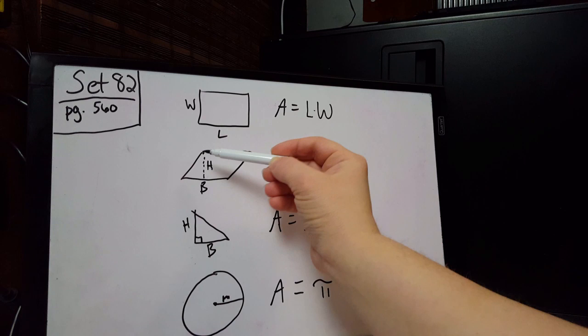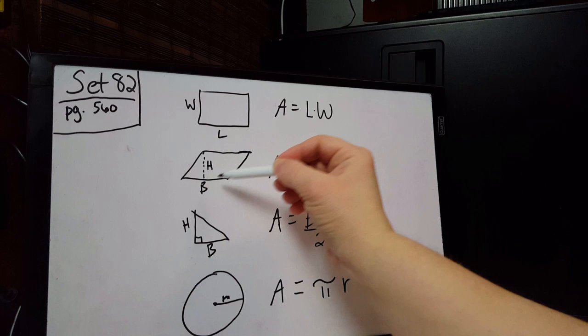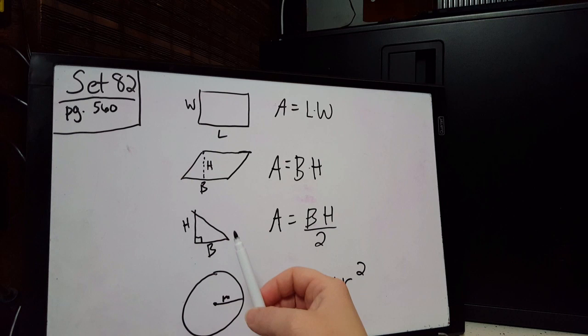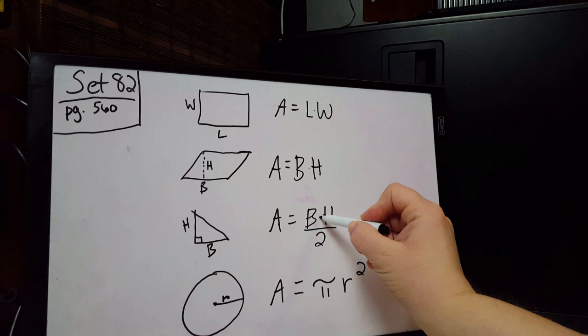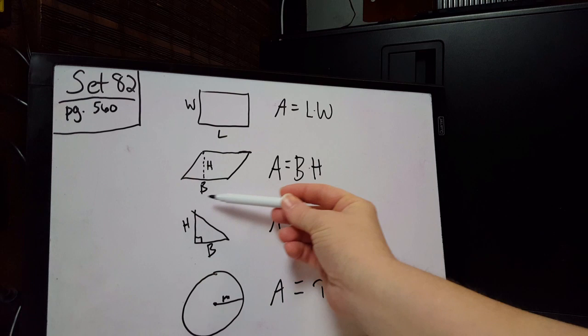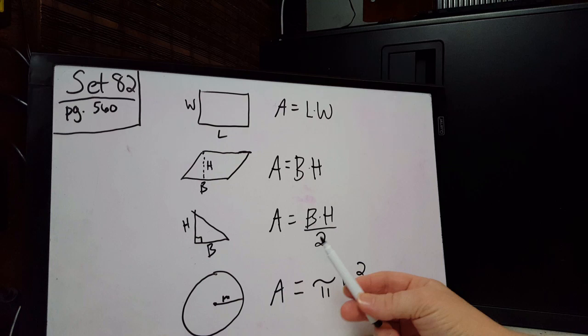We've also learned about finding the area of a parallelogram — we use base times height, where the height is the distance from the bottom line to the top line, never the slanted line. We've also learned about the area of a triangle, which is base times height — the same as the rectangle and parallelogram — except in a triangle we always divide by two, because the area of a triangle is half of a rectangle or parallelogram: base times height divided by two.